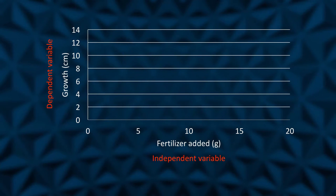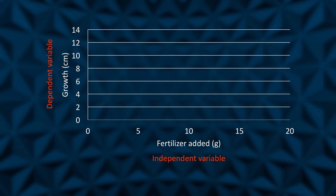Scatter plots are similar to line graphs in that they start with mapping quantitative data points. The difference is that with a scatter plot, the decision is made that the individual points should not be connected directly together with a line, but instead express a trend.